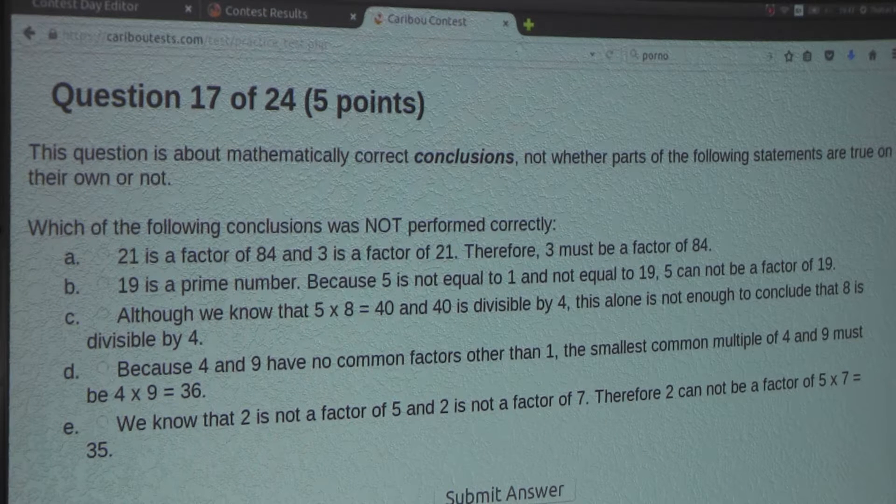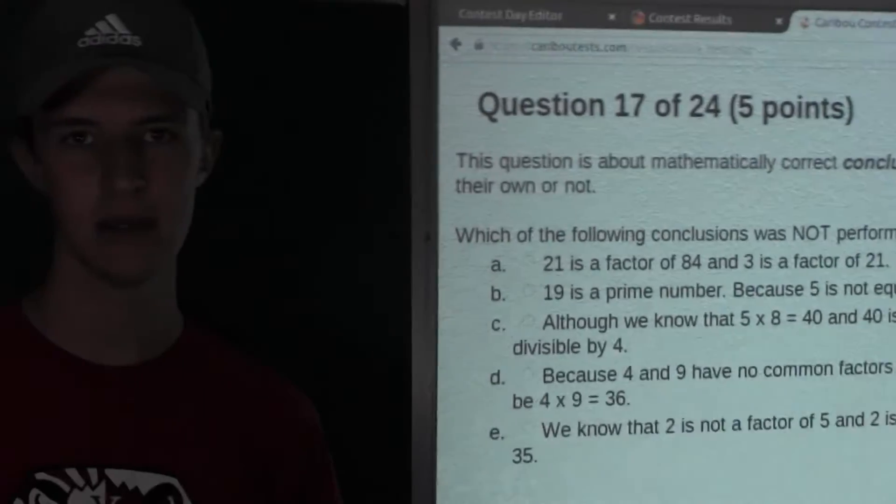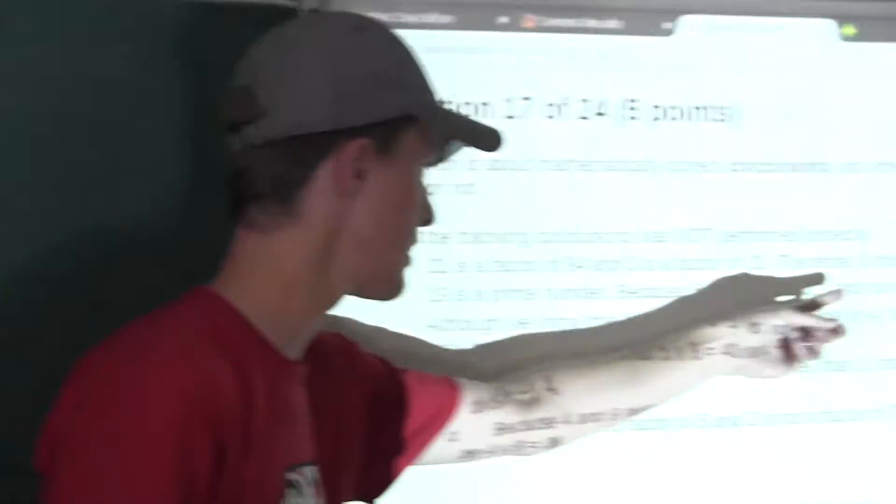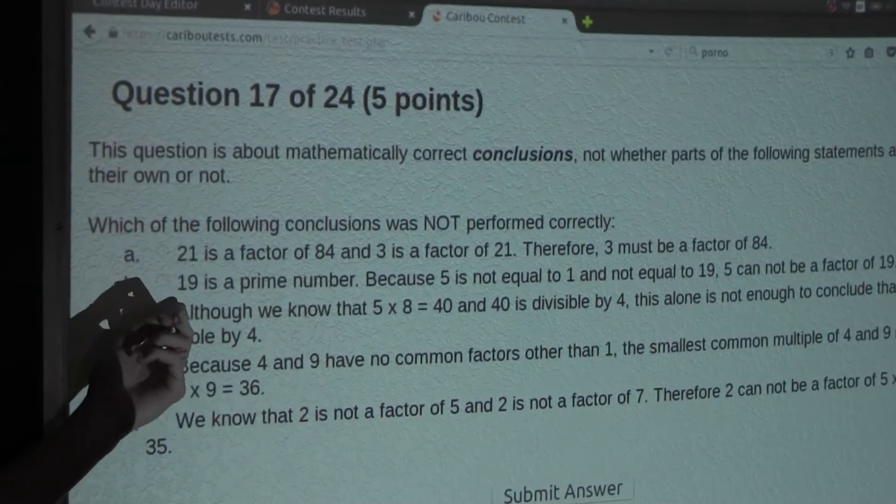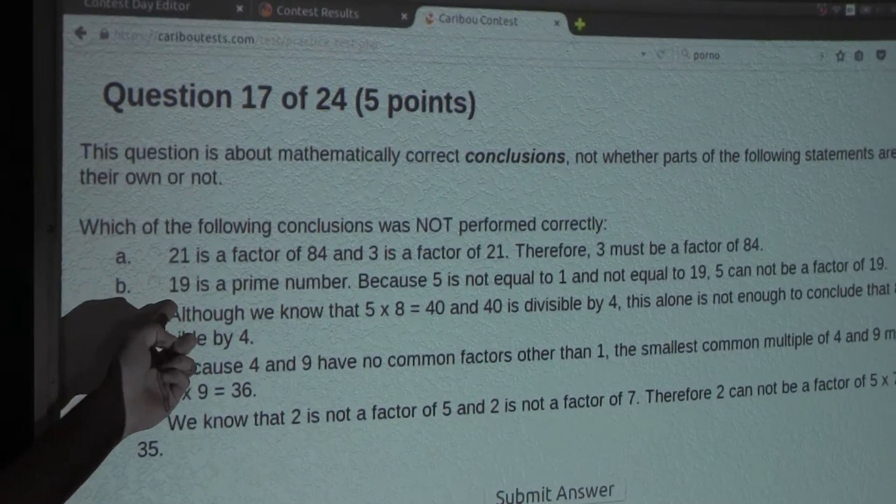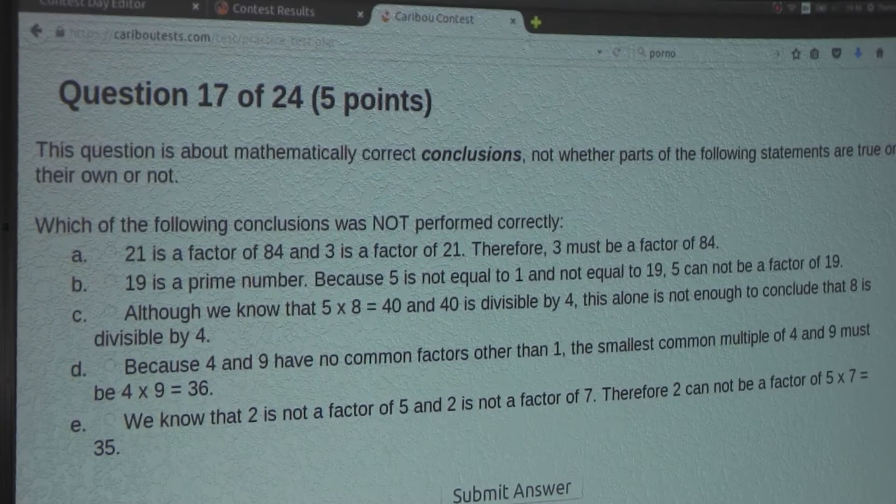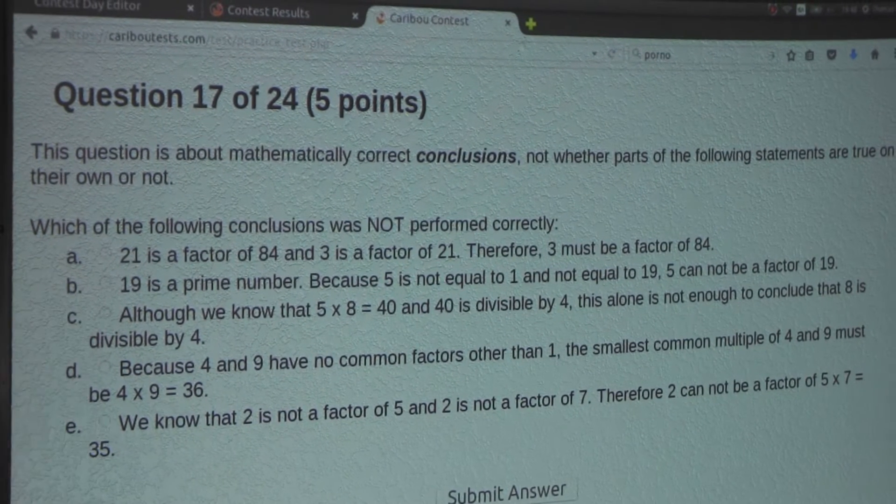Well, we know that any prime number can only be divided by itself and 1. And here it clearly states 5 is not equal to 1, and it is not equal to the number itself, which is 19, which means that it cannot be a factor of 19. Well, this must be true. So, option B is also true.